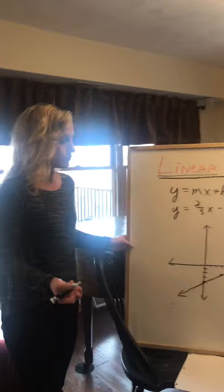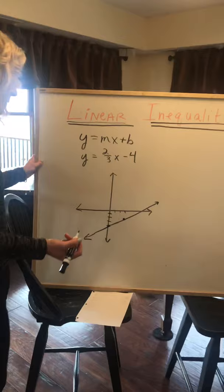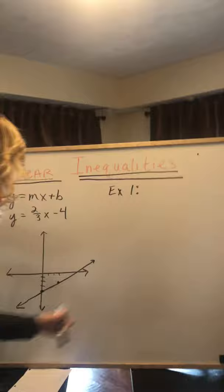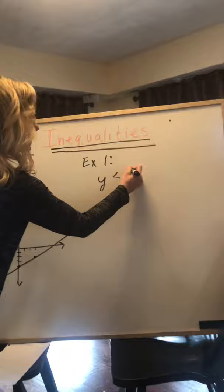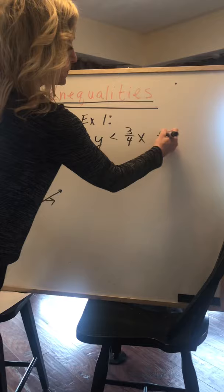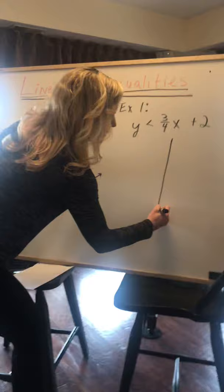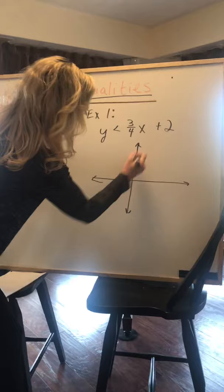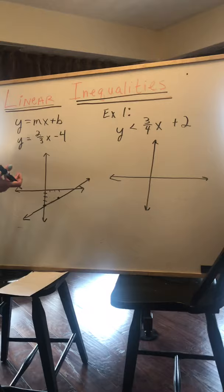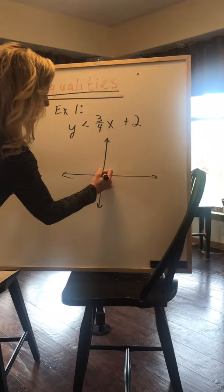Now we're going to do this as an inequality. So our first example we have as y is less than three-fourths x plus 2. So very similar here. Our x-axis and our y-axis. So we're lucky it's in slope-intercept form, y equals mx plus b. So we plot our b, which is our y-intercept. We'll plot that on 2, up 2. That's the point 0, 2.